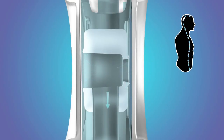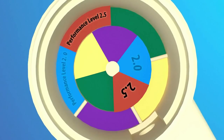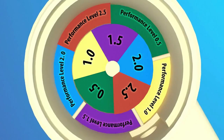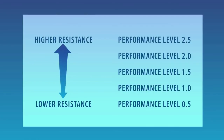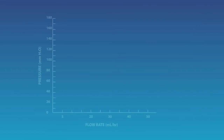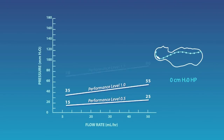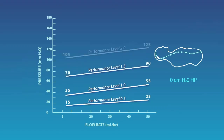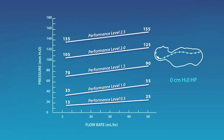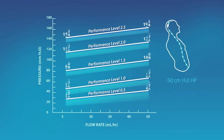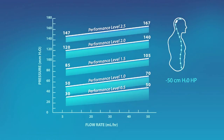Since there are five platforms in the valve mechanism, there are five performance levels which directly correlate to the pressure flow rates. Performance levels are 0.5, 1.0, 1.5, 2.0, and 2.5. These numerical descriptions are synonymous with valve pressure ranges from a lower to a higher resistance. As shown by the performance level chart, the StratoValve system maintains a consistent pressure gradient regardless of the flow rate or patient posture.